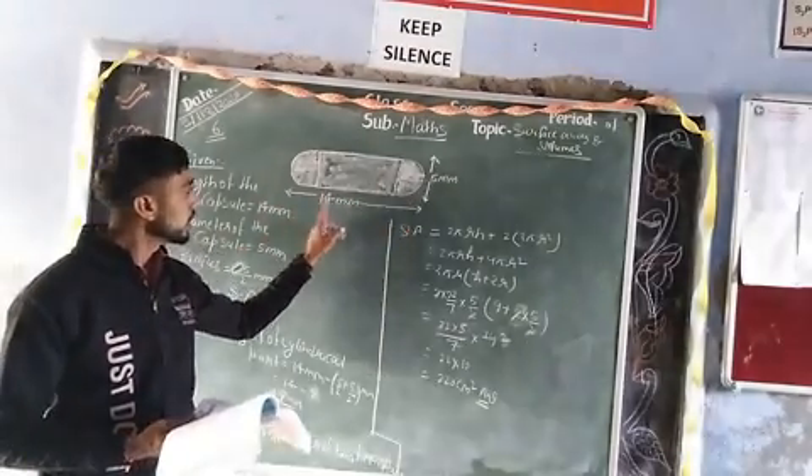The length of the entire capsule is 14 mm and the diameter of the capsule is 5 mm. Find its surface area.